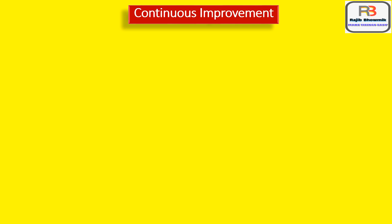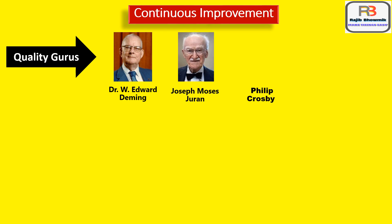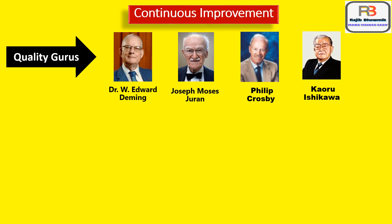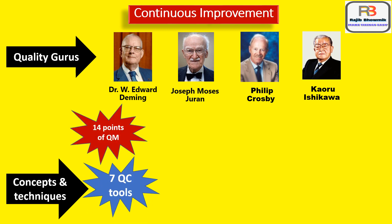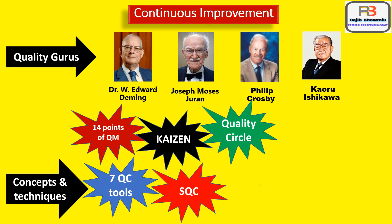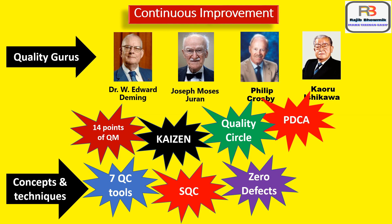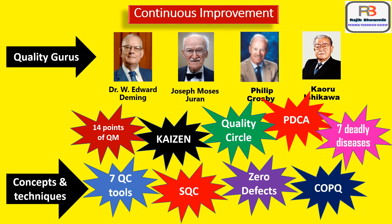In TQM we are talking about continuous improvement. There are many quality gurus like Edward Deming, Joseph Moses Juran, Philip Crosby, Kaoru Ishikawa, and many more. They have given their various concepts and techniques for continuous improvement. These include: 7 QC Tools, 14 Points of Quality Management, Kaizen, SQC that is Statistical Quality Control, Quality Circle, Zero Defect, PDCA that is Plan Do Check Act, COPQ that means Cost of Poor Quality, and 7 Deadly Diseases. By implementing these concepts and techniques, continuous improvement can be done in TQM.